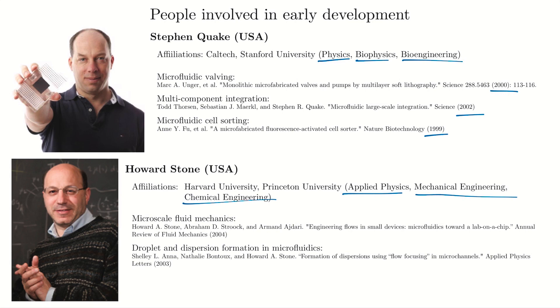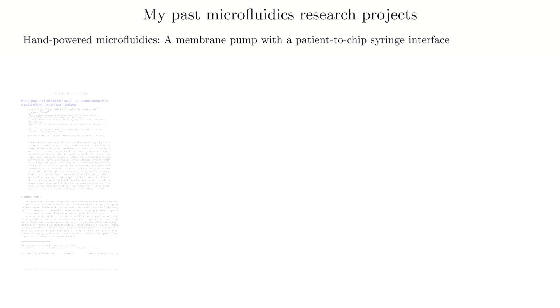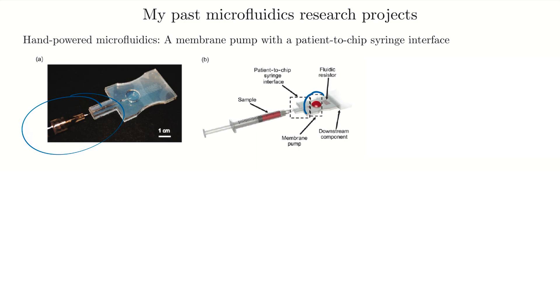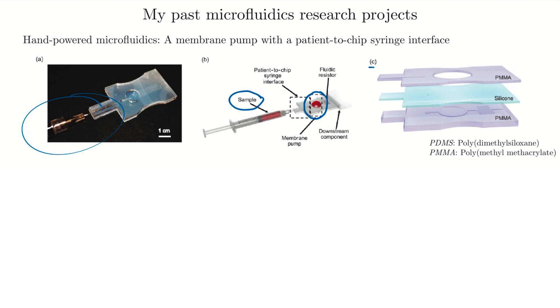Now I want to show you some of my past microfluidics research work. The first is hand-powered microfluidics. We made a device where you put a syringe in on the left, use your thumb to push it, which stretches out a pump and uses that force to push blood or another sample fluid through the device. I've shown our layered device with PMMA (polymethylmethacrylate, a hard plastic), silicone, and PMMA layers. We used a laser to cut channels in the PMMA, and the silicone — similar to PDMS, a soft rubbery flexible sheet — serves as the membrane that can be stretched.